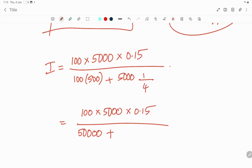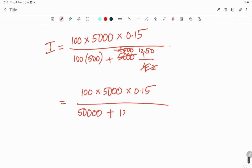We can write 0.25 as 1/4, which gives 1250 in the denominator. So the denominator becomes 51,250.